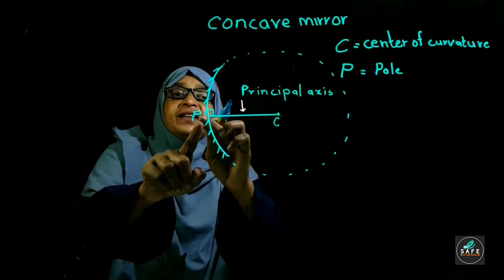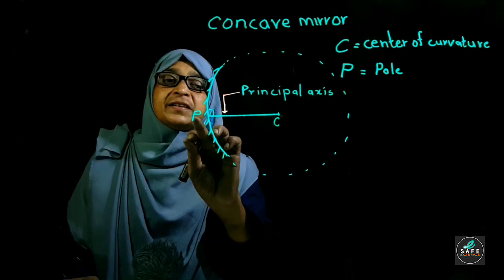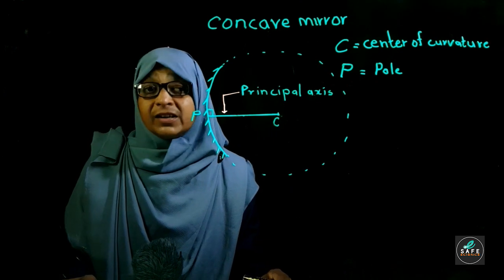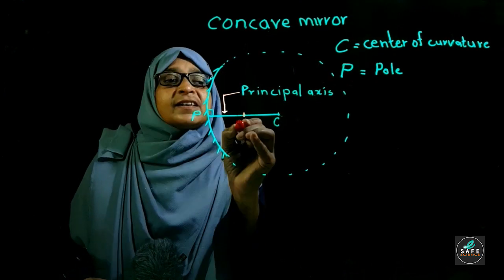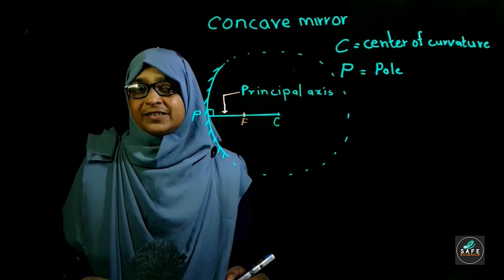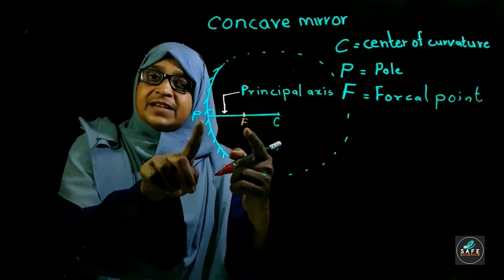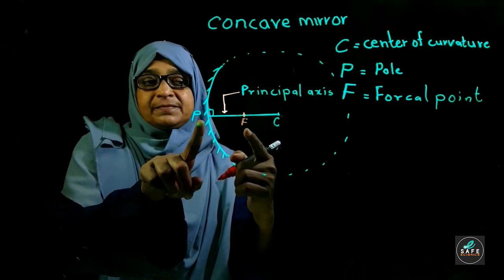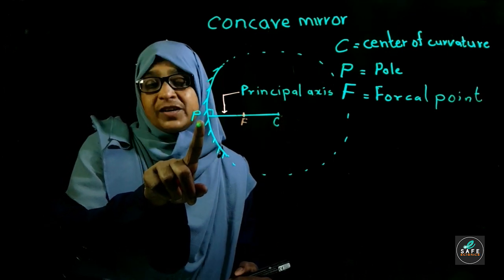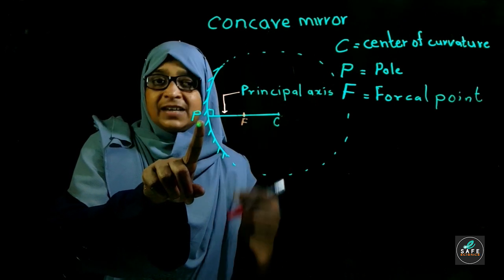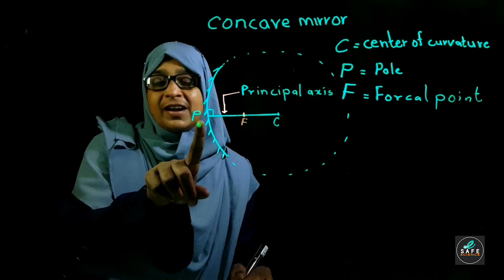Between the pole and the center of curvature, on the principal axis, there is the focal point. The distance between the pole and the focal point is known as the focal length. The focal length is exactly half of the radius, so the radius is twice the focal length.